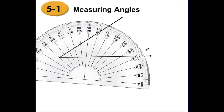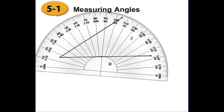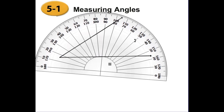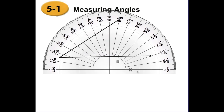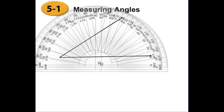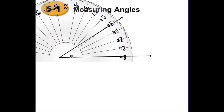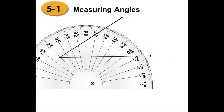Let's look at the protractor more closely. From one side you read 0, 10, 20, 30, 40... and the other side also reads 0, 10, 20, 30, 40. It's very useful that we have two sets of numbers — two zeros.